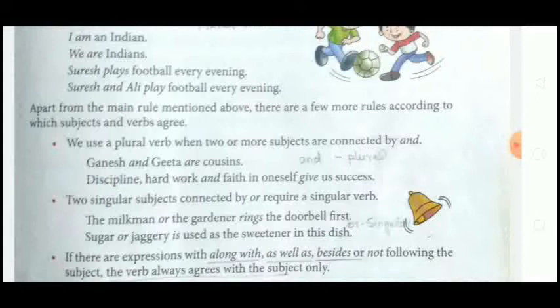'Discipline, hard work, and faith gives us success' — here the subject has three words: discipline, hard work, and faith, all connected by 'and'. Since the subject is two or more and connected by 'and', we use the plural verb 'give'. So Rule 1: if there are two or more subjects connected by 'and', the verb will be in plural form.